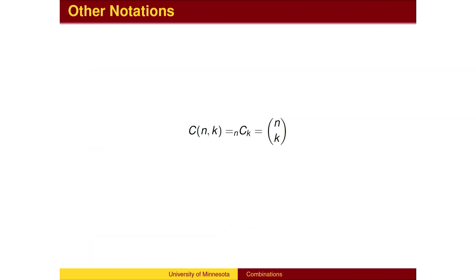Since we have a formula for counting permutations, we can get a formula for combinations by dividing by k factorial. Similar to permutations, there are several notations for combinations, substituting a C for combination in place of the P for permutation. The final notation is called the binomial coefficient. It places the n and k inside parentheses, stacked as if it were a fraction, except without the fraction bar. It is read n choose k.